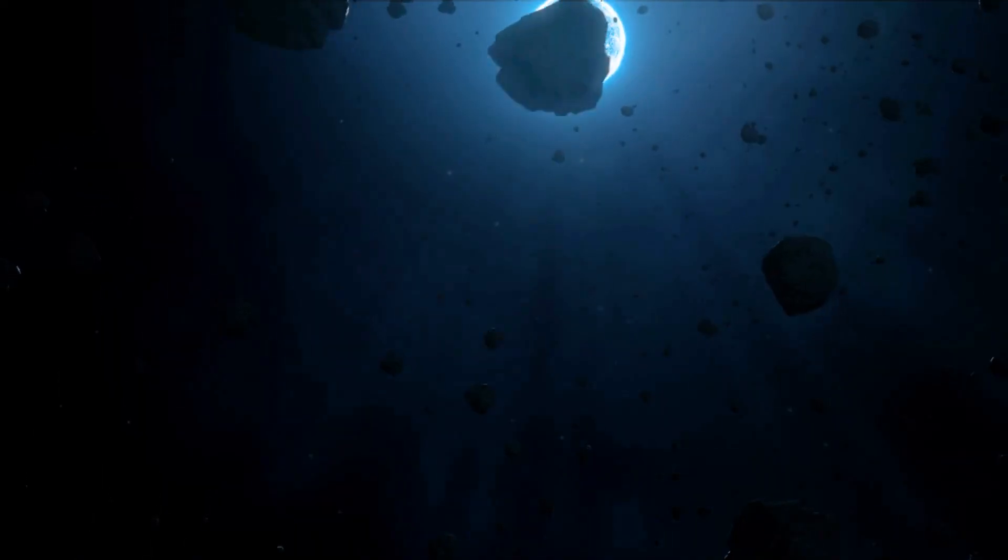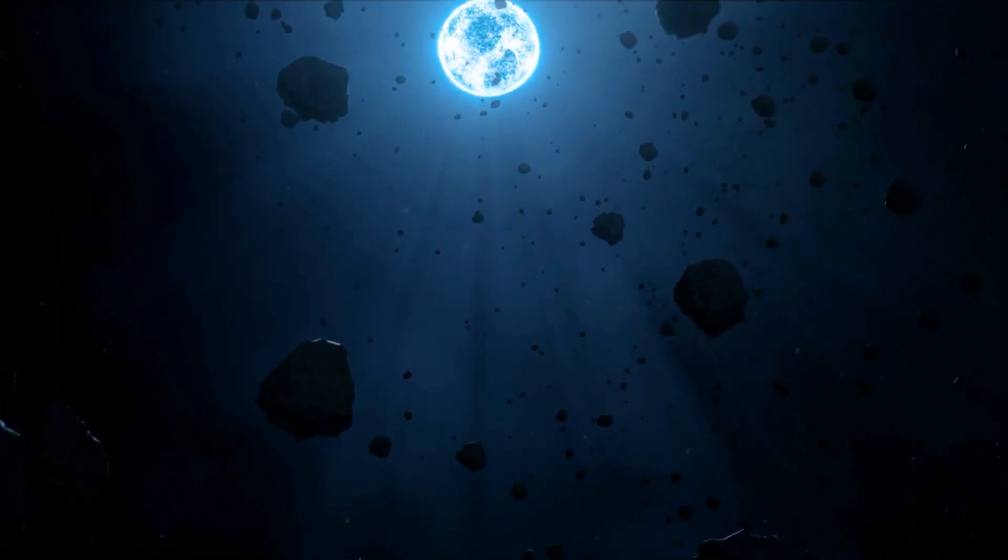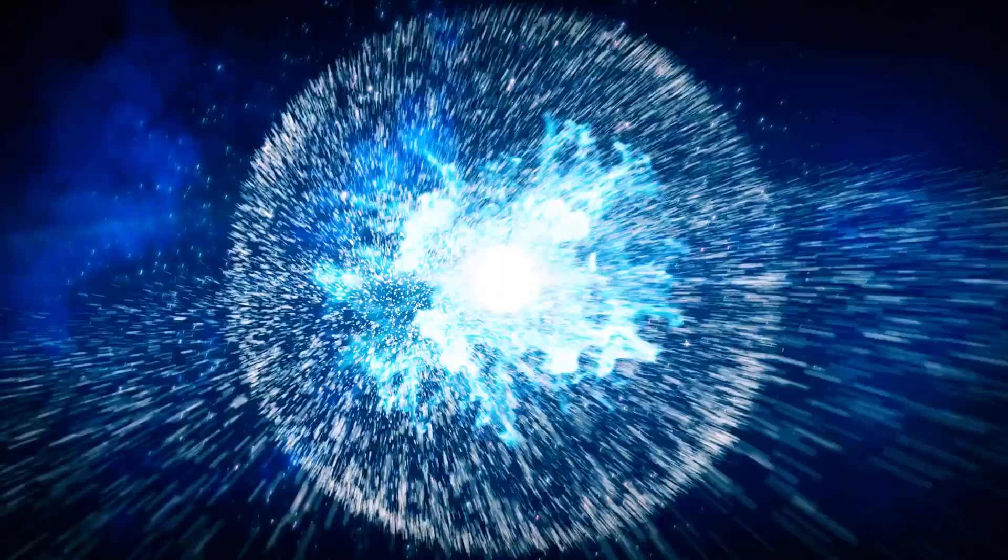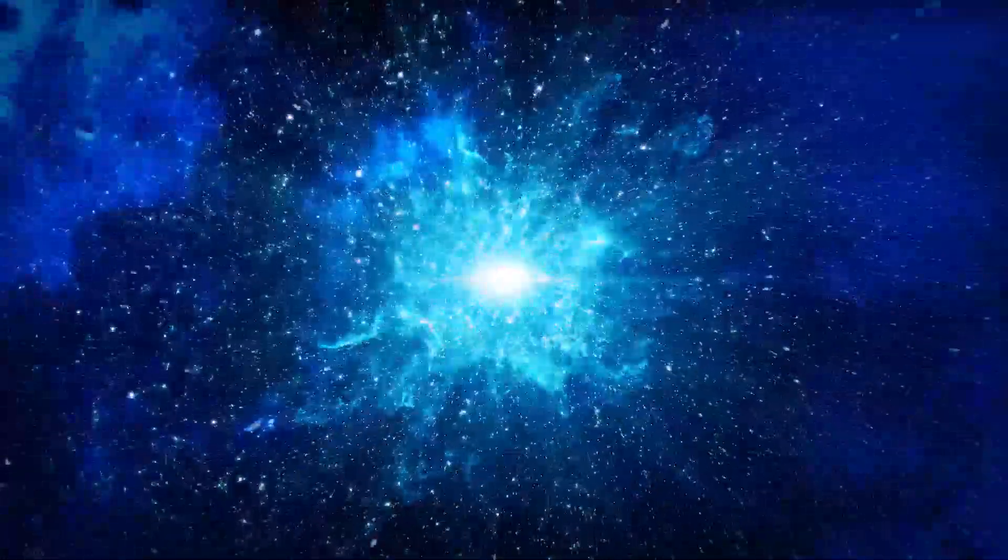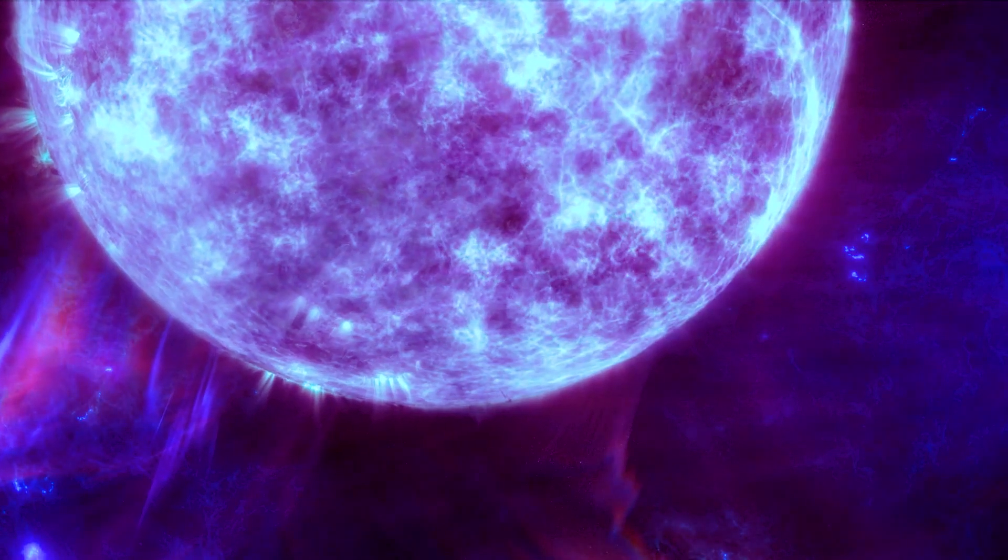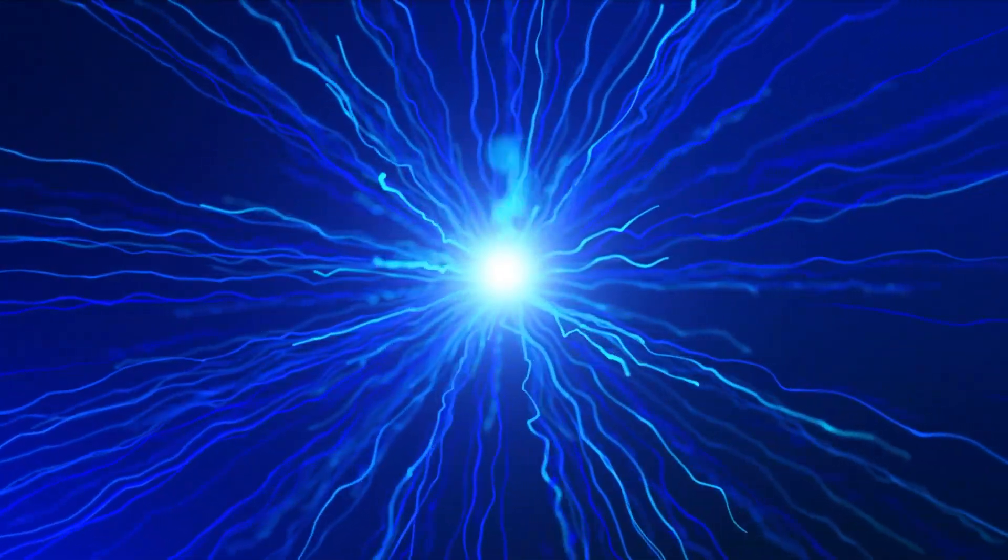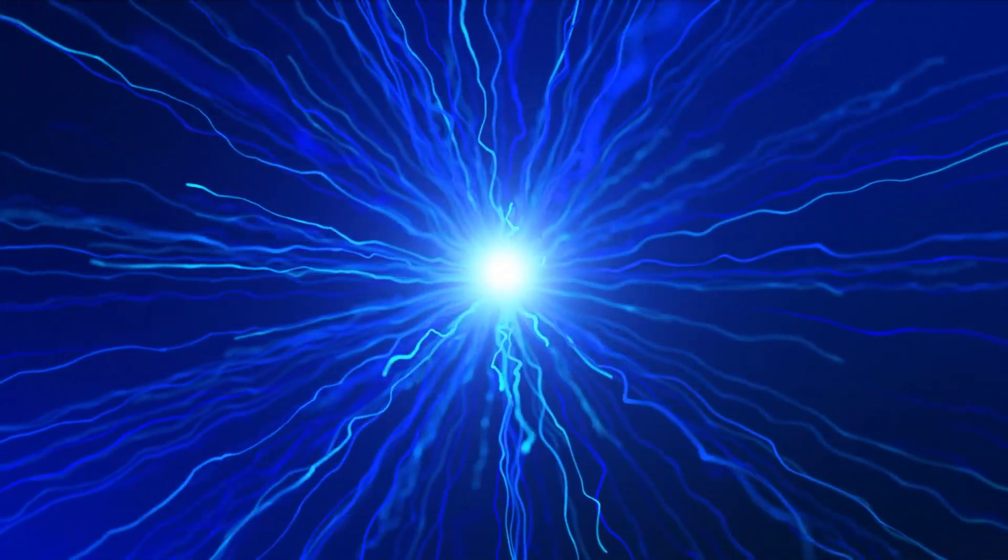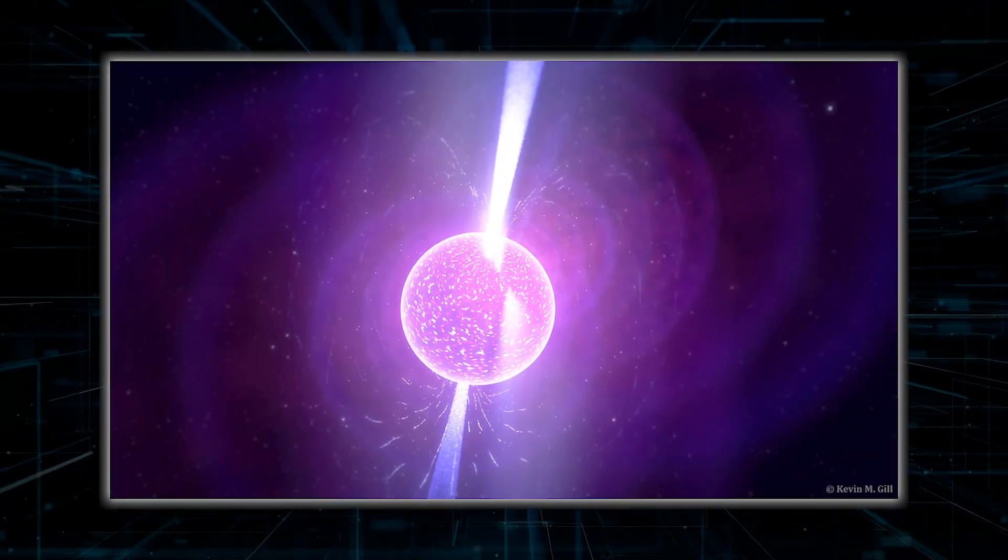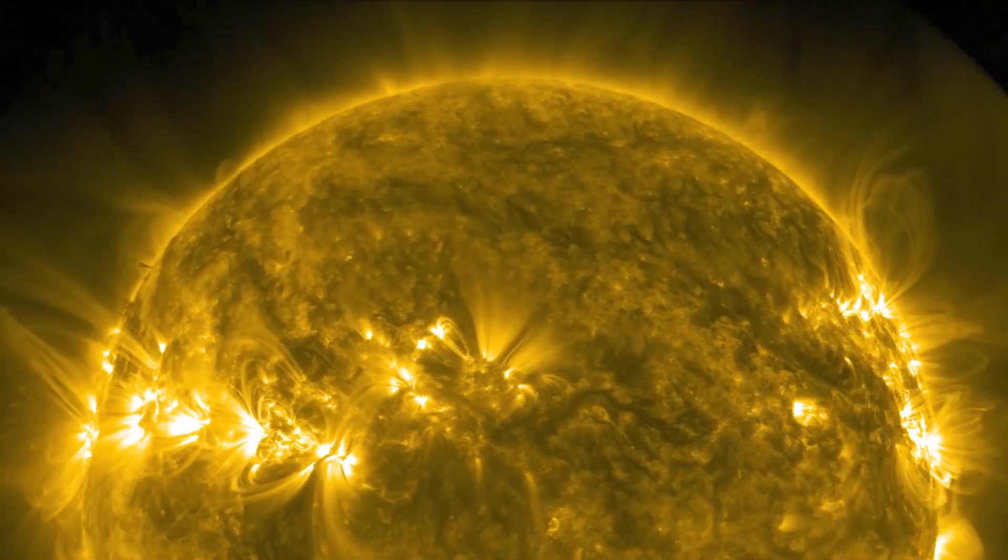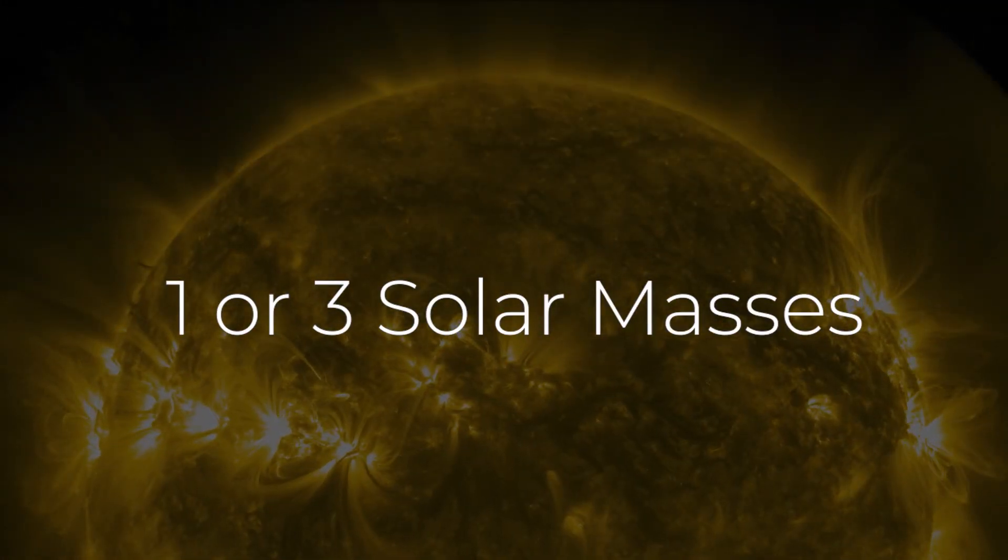Let's first understand what are pulsars and neutron stars. When a big star runs out of fuel and collapses, neutron stars are created. Every proton and electron in the star's core are crushed together to become neutrons when the core collapses. These newly produced neutrons have the ability to stop the collapse of a dying star and leave behind a neutron star if the star's core is between one and three solar masses.